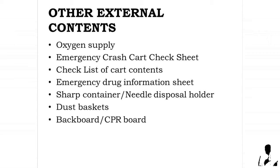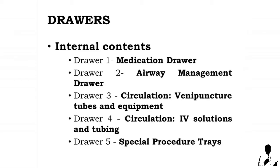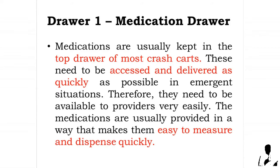For the internal contents, the crash cart has the following drawers: Drawer 1 - medication drawer; Drawer 2 - airway management drawer; Drawer 3 - circulation, venipuncture tubes and equipment; Drawer 4 - circulation, IV solutions and tubing; Drawer 5 - special procedure trays.